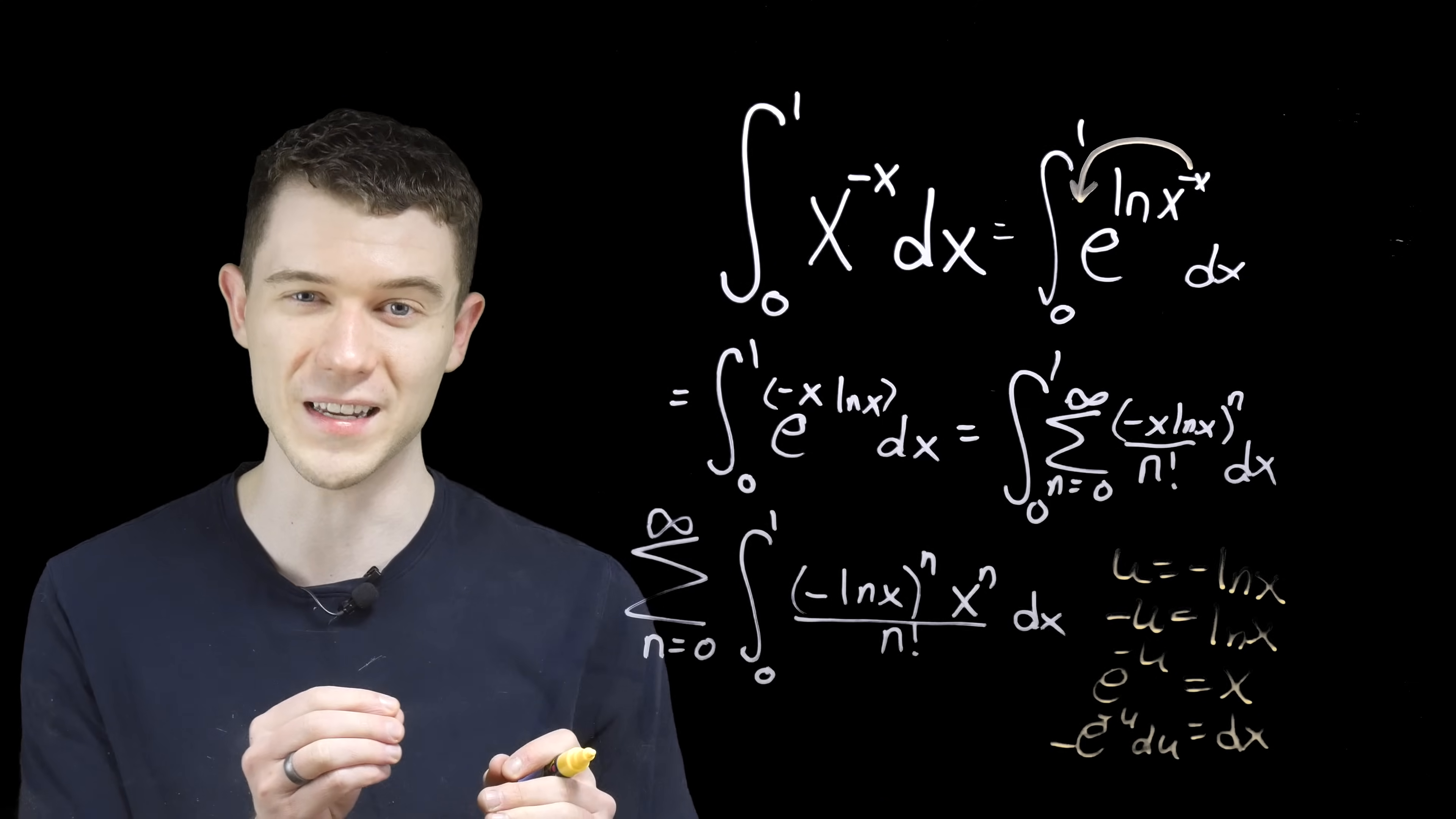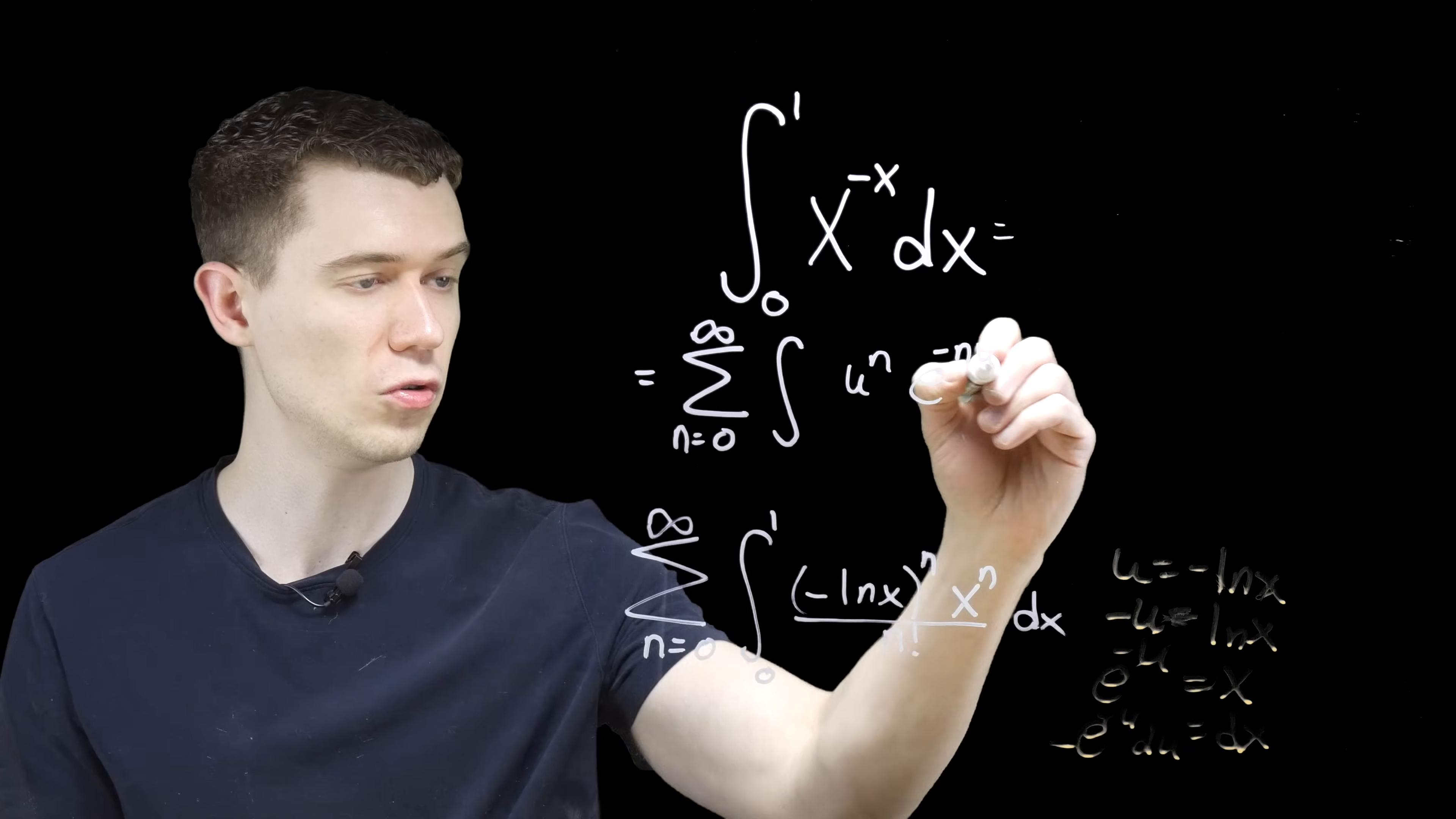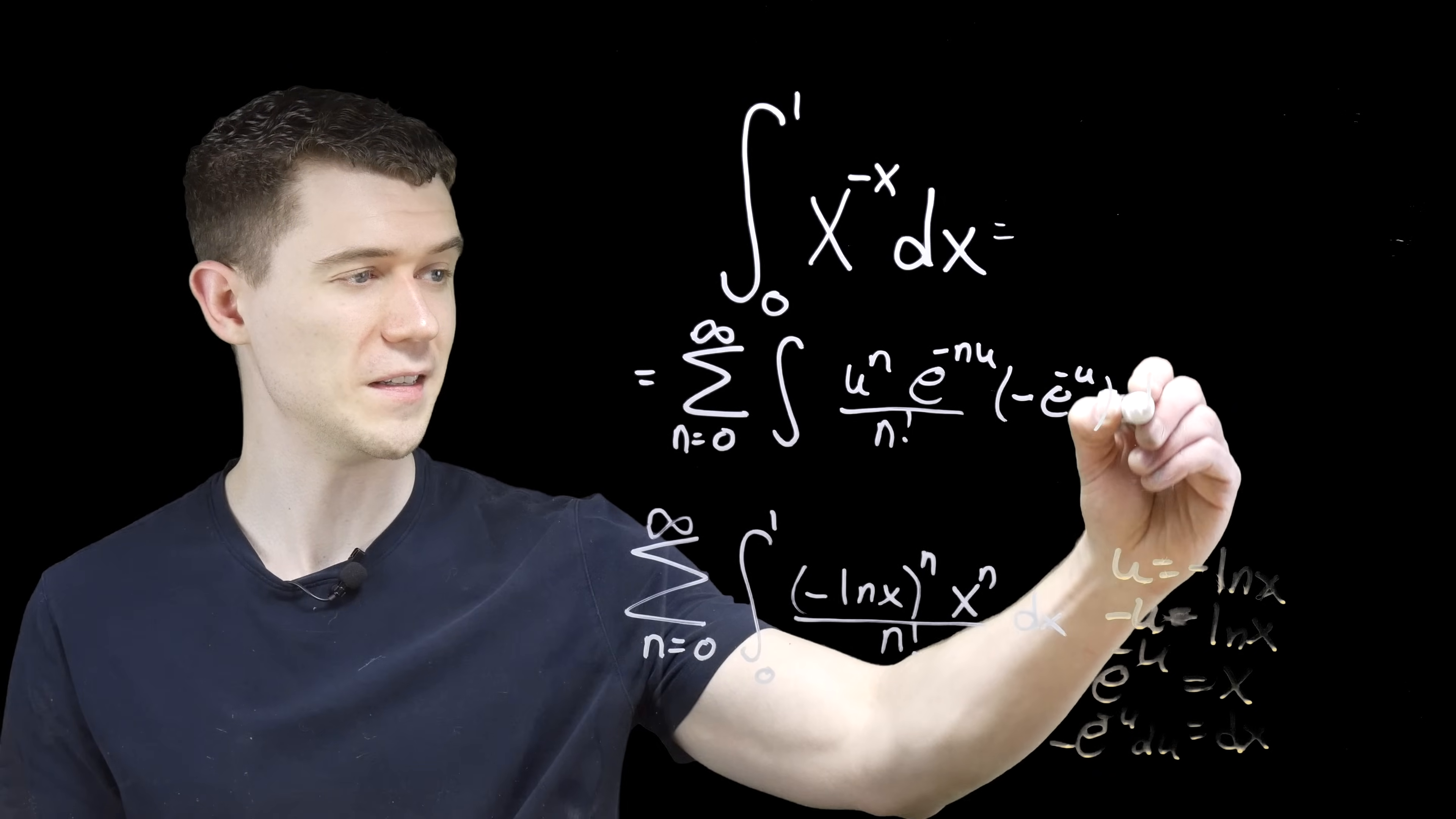Let's rewrite this integrand. So what we have now, minus ln of x, that becomes u. x to the n, well, that will be e to the minus u to the n. So this will be e to the minus nu, using properties of exponents. Still over n factorial. We also have dx. dx we know to be minus e to the minus u. This is du.